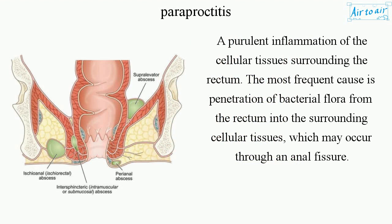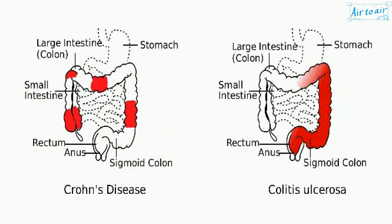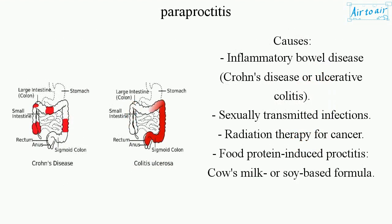The most frequent cause is penetration of bacterial flora from the rectum into the surrounding cellular tissues, which may occur through an anal fissure. Other causes include inflammatory bowel disease, Crohn's disease or ulcerative colitis, sexually transmitted infections, radiation therapy for cancer, and food protein-induced proctitis from cow's milk or soy-based formula.